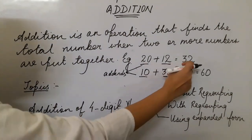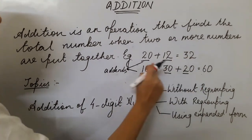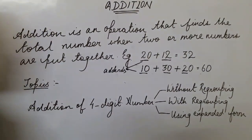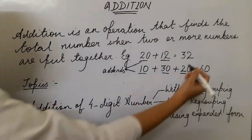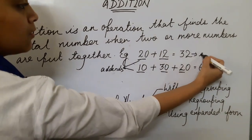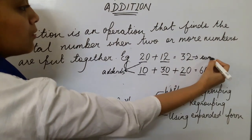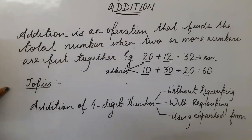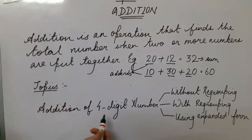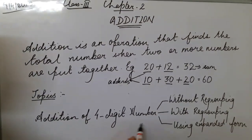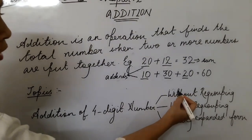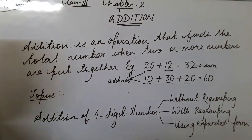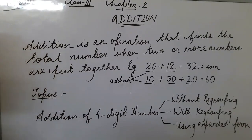The answer — like 20 plus 12 gives the answer 32 — the answer of addition we call it the sum. So in today's topic we will study: addition of 4-digit numbers first without regrouping, next with regrouping, and lastly using expanded form.